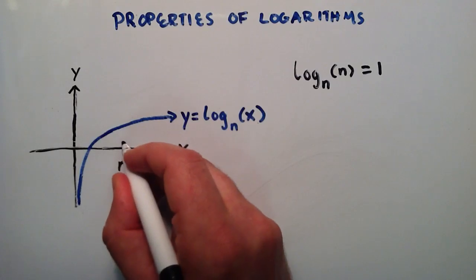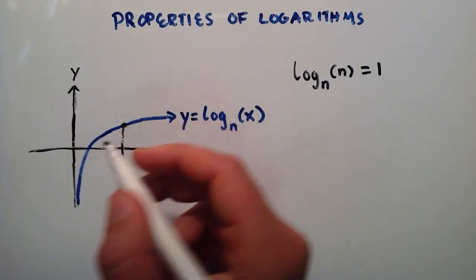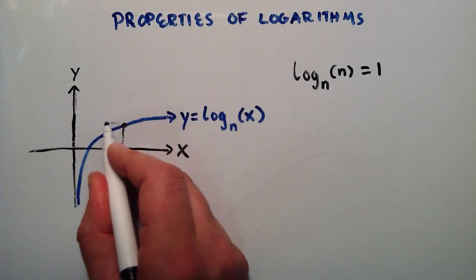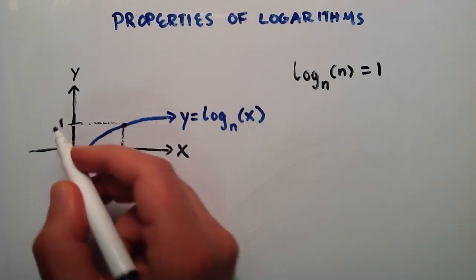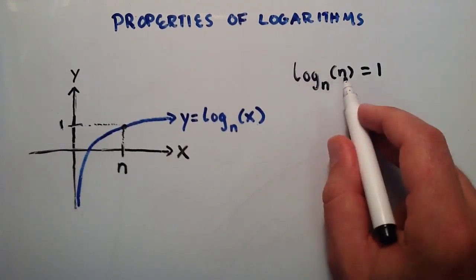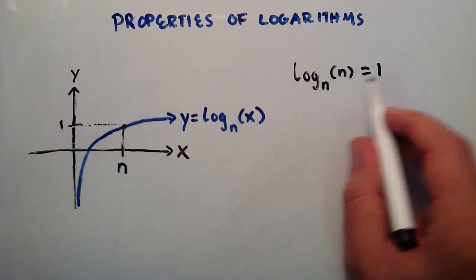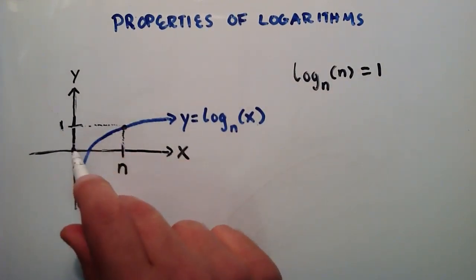That means that we're going to get a corresponding y value of 1. So we just go up parallel to the y axis, and this point right here, traveling back parallel to the x axis now, means this point is equal to 1. So for log base n of n, the corresponding y value is equal to 1. So that's how to look at it graphically.